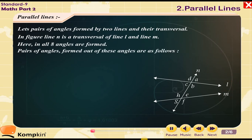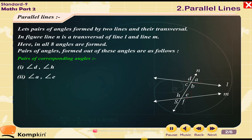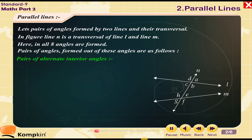Pairs of angles formed out of these angles are as follows. Pairs of corresponding angles: 1. Angle D and angle H. 2. Angle A and angle E. 3. Angle C and angle G. 4. Angle B and angle F.